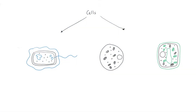This video is a general overview about cell structure in GCSE biology following the AQA specification. The aim is to give you a general idea about the two different types of cells, looking at bacterial cells, animal cells, and plant cell structure, and also how we use microscopes to observe cells.